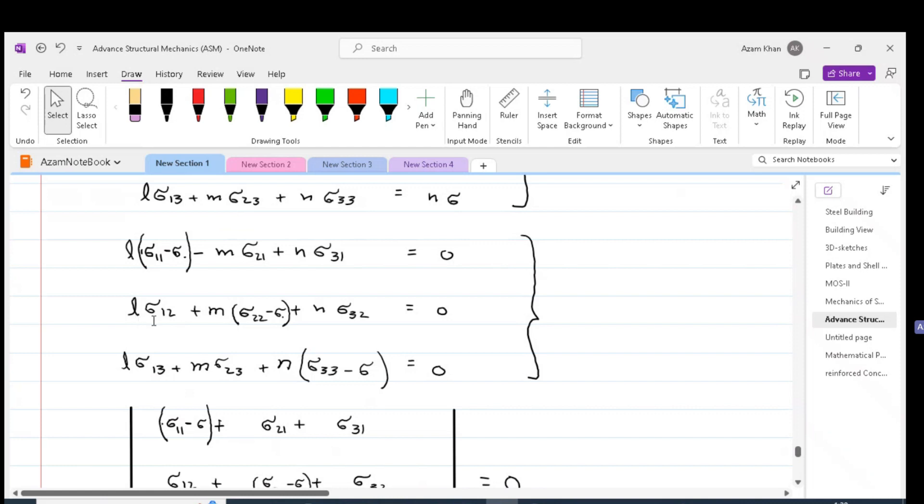Second equation is L times sigma_12 plus M times (sigma_22 minus sigma) plus N times sigma_32. The third equation is L times sigma_13 plus M times sigma_23 plus N times (sigma_33 minus sigma) equal to zero.